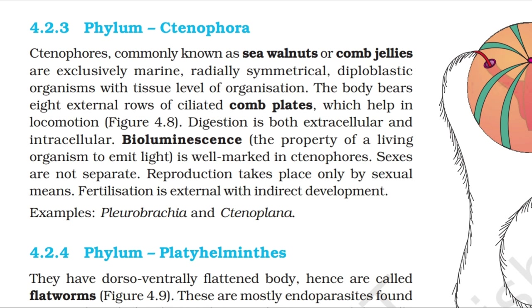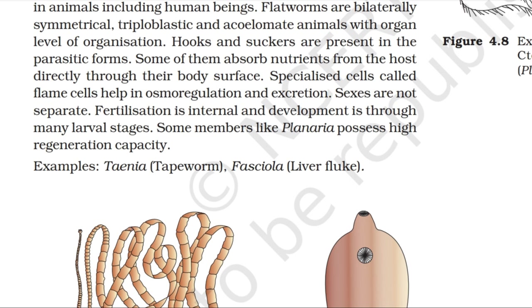Topic 4.2.4: Phylum Platyhelminthes. They have a dorso-ventrally flattened body, hence are called flatworms. These are mostly endoparasites found in animals including human beings. Flatworms are bilaterally symmetrical, triploblastic and acoelomate animals with organ level of organization. Hooks and suckers are present in the parasitic forms. Some of them absorb nutrients from the host directly through their body surface. Specialized cells called flame cells help in osmoregulation and excretion. Sexes are not separate. Fertilization is internal and development is through many larval stages. Some members, like Planaria, possess high regeneration capacity. Examples: Taenia (tapeworm) and Fasciola (liver fluke).